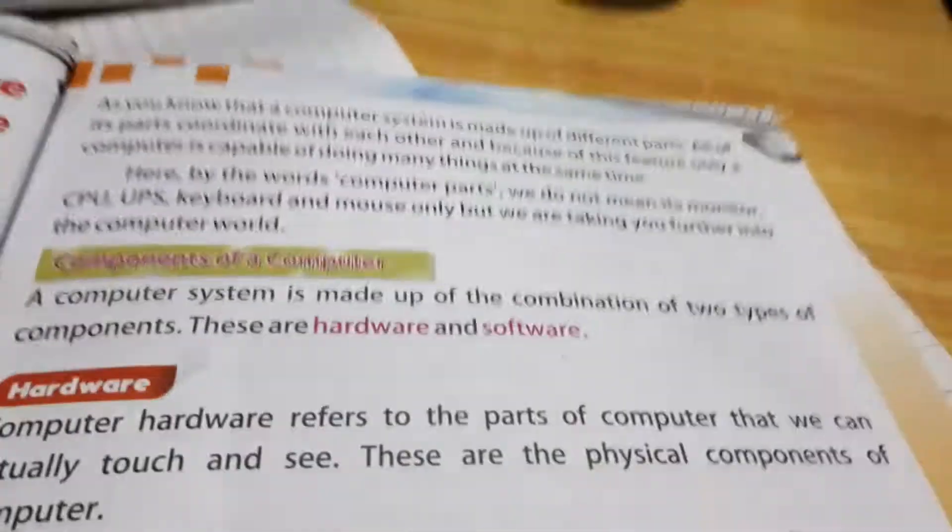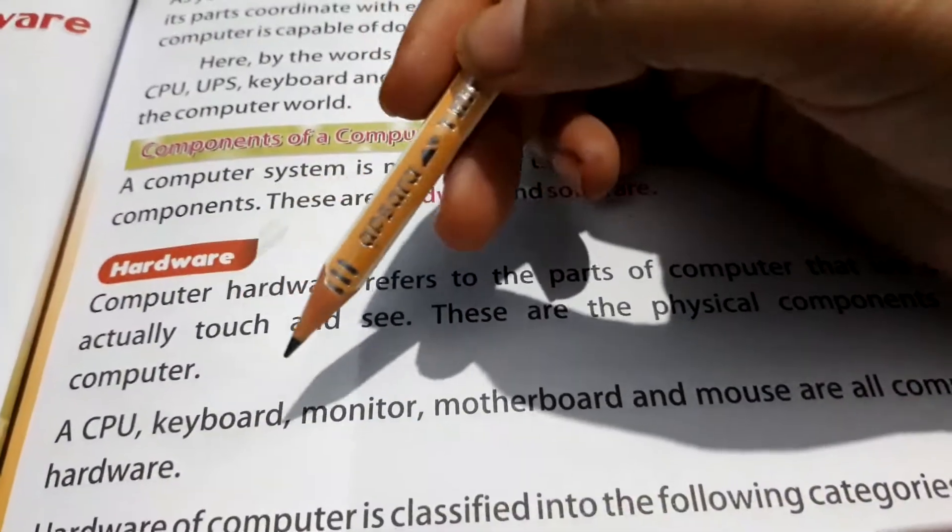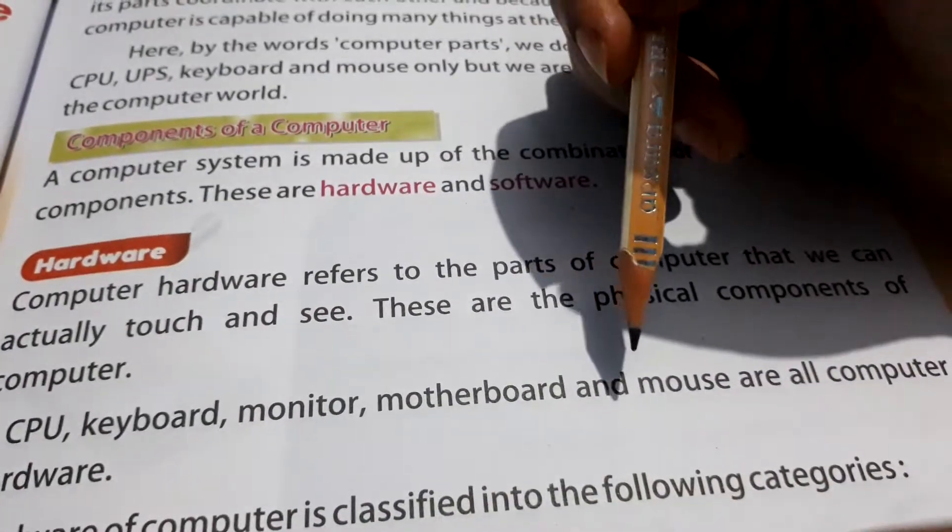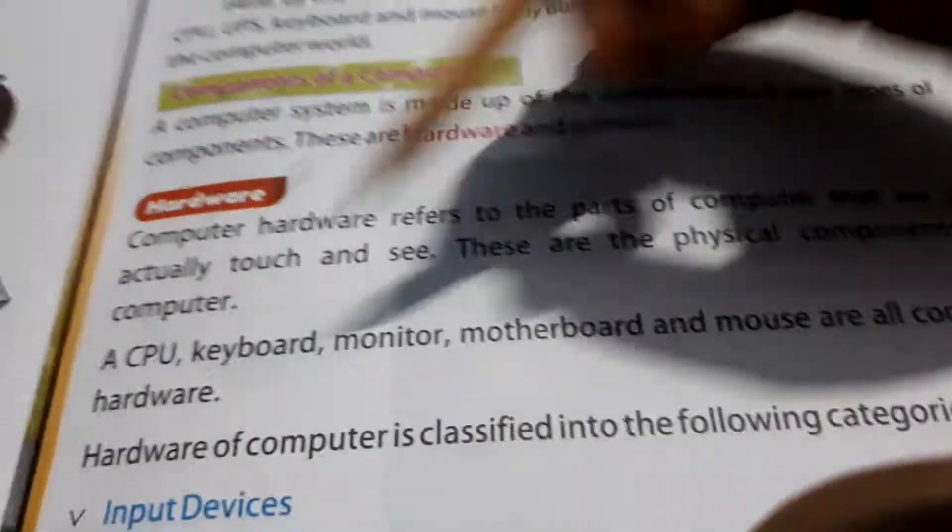These are physical components, like our skin, physical components, eyes, which we can see. CPU, keyboard, monitor, motherboard and mouse are all computer hardware. These are all computer hardware.